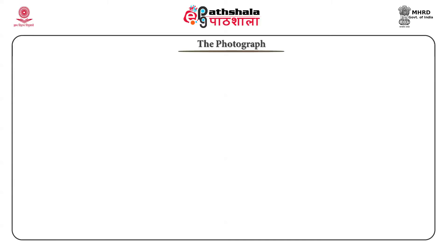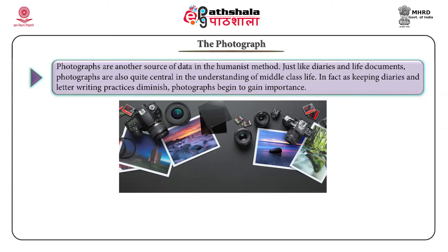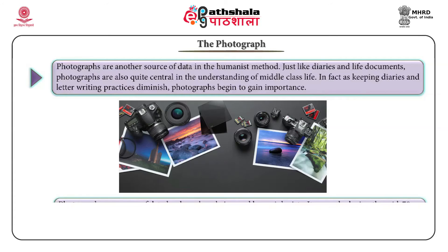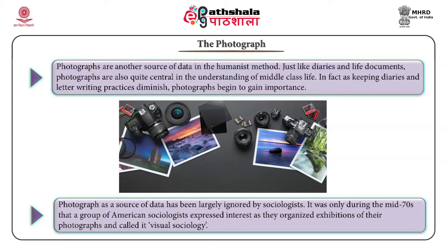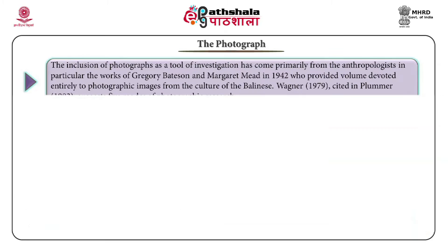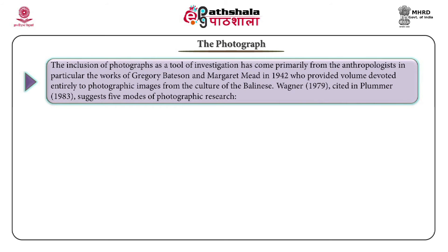Photographs are another source of data in the humanist method. Just like diaries and life documents, photographs are also quite central in the understanding of middle class life. As keeping diaries and letter writing practices diminish, photographs begin to gain importance. Photographs as a source of data has been largely ignored by sociologists. It was only during the mid-70s that a group of American sociologists expressed interest and called it visual sociology. The inclusion of photographs as a tool of investigation came primarily from anthropologists, in particular the works of Gregory Bateson and Margaret Mead in 1942, who provided a volume devoted entirely to photographic images from the culture of the Balinese.